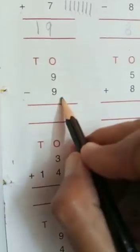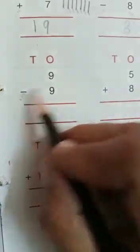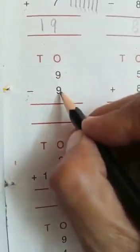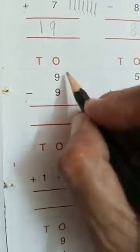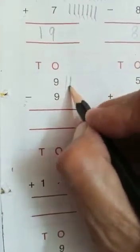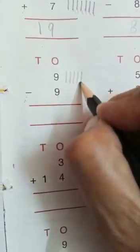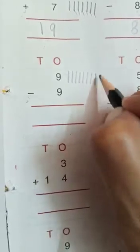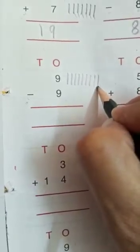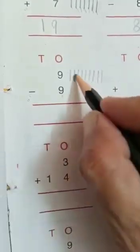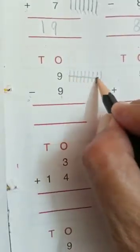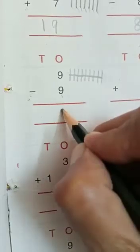Now next question: 9 minus 9. Look here — we have to take 9 from 9 lines: 1, 2, 3, 4, 5, 6, 7, 8, 9. And we have to cut all 9 lines. The answer is 0. Clear?